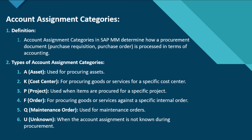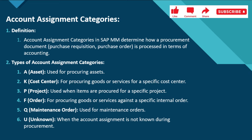If we have a trading department or a maintenance department and we are procuring goods for them, then we put K in the line item. P is for project, used when items are procured for a specific project. F is for order, for procuring goods or services against a specific internal order. Q is for maintenance orders. And when the account assignment is not known during the procurement cycle, we use U, which is unknown.